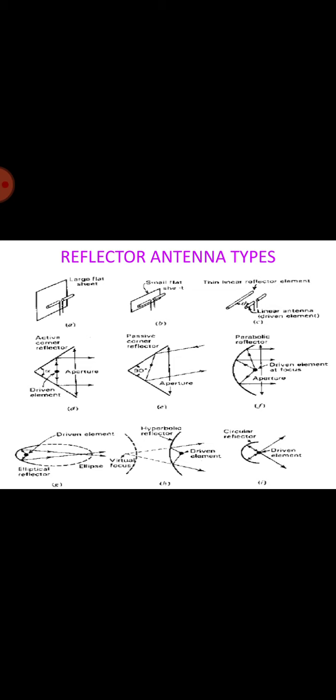Many other shapes of reflectors can be employed for special applications. For instance, with antenna at one focus, the elliptical reflector produces a diverging beam with all reflected waves passing through the second focus of the ellipse. Examples of reflectors of other shapes are hyperbolic antenna and circular reflectors.